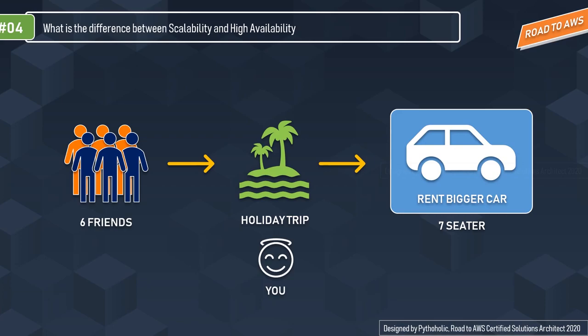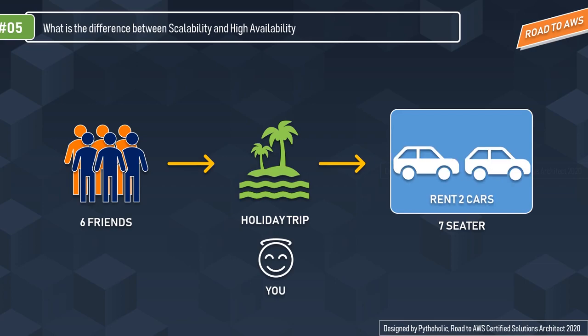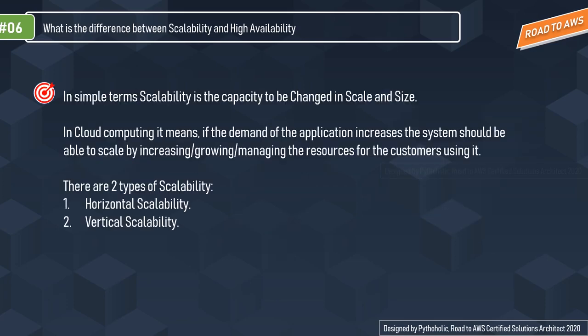We need to improvise. We can hire a bigger car to fit everyone, or hire two cars with four-seater capacity. These scenarios are basically us meeting the requirement by scaling to cope with the need. In terms of cloud computing, scaling is the capability of a system to meet requirements by changing its scale and size.